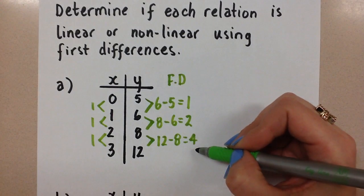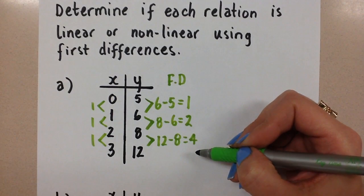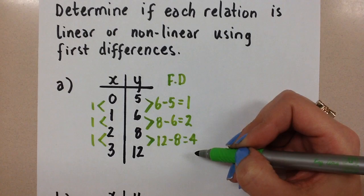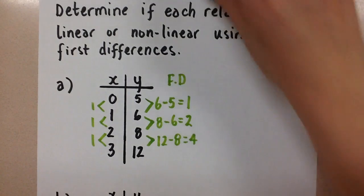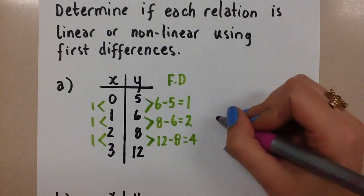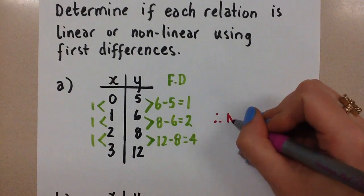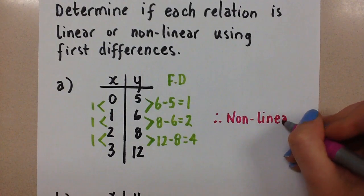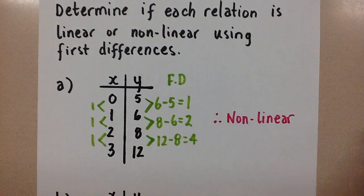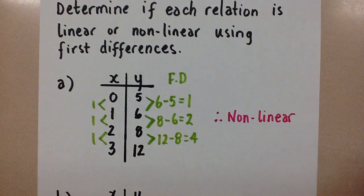They're all different. In order for a relation to be linear, all of the first differences have to be equal. These are not equal, so we can confirm then that this relation is non-linear. We can't confirm any other type of relation here just from the first differences, but so far we could say that this is non-linear. That's all that we need to do right now.